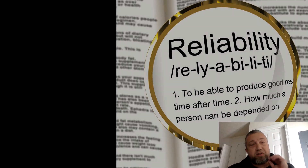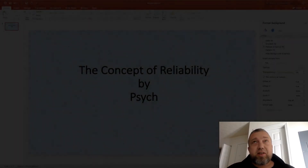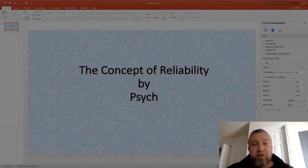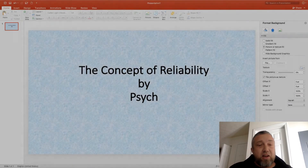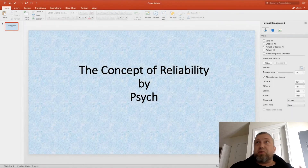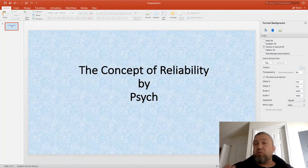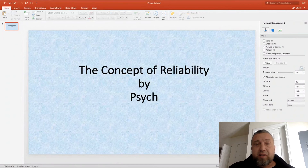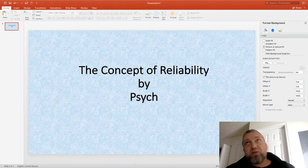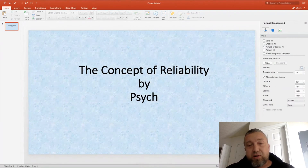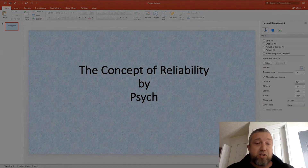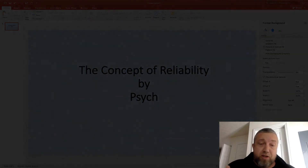Scores on an educational and psychological test are very similar to our cars. Some scores — or some set of scores — are going to be more random than other scores, more unpredictable than other scores. They're less trustworthy, dependable, and consistent. So in other words, some scores are going to be more or less reliable than other scores because they contain less measurement error or maybe more measurement error.